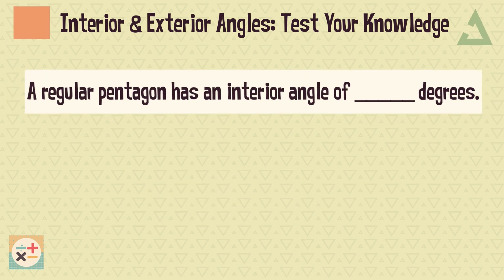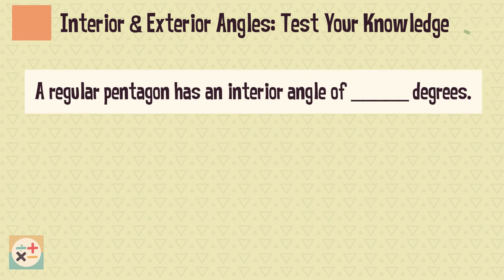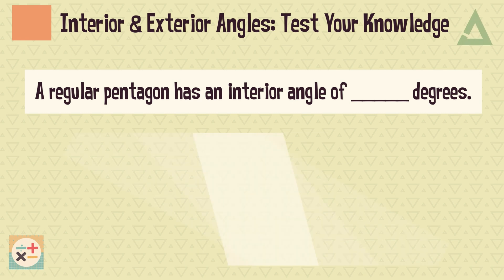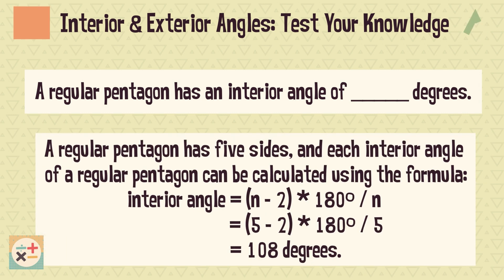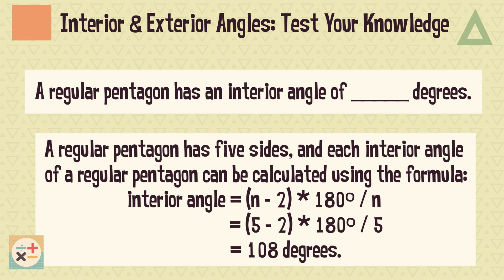Question 4. A regular pentagon has an interior angle of how many degrees? A regular pentagon has five sides, and each interior angle of a regular pentagon can be calculated using this formula. Therefore, the interior angle is 108 degrees.